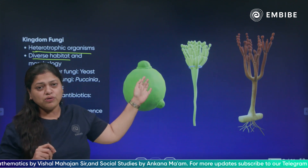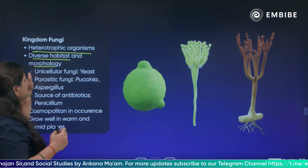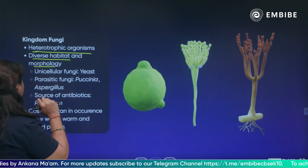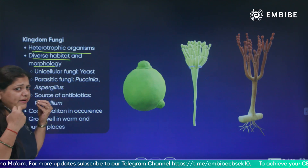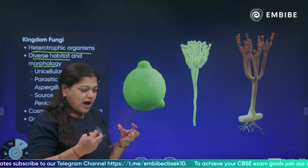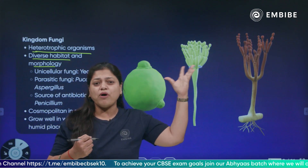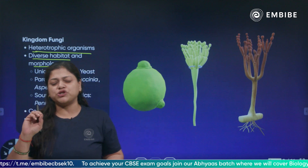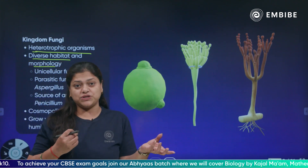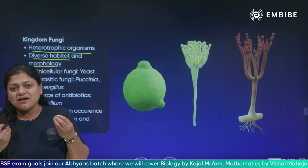These are called fungi — heterotrophic organisms. Their morphology is different and their habitat is also diverse. They are cosmopolitan in nature — you can find them anywhere. Leave a pickle jar open and fungus will grow on it; it can even grow on clothes. So they are cosmopolitan in nature, found everywhere.